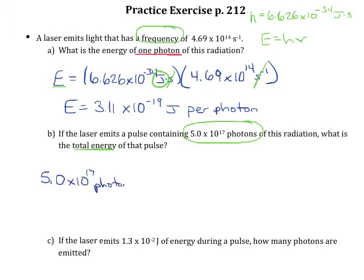and I know that I am emitting 3.11 times 10 to the negative 19 joules of energy for every photon that's emitted.